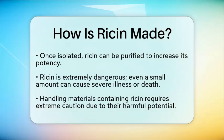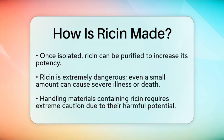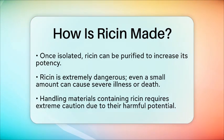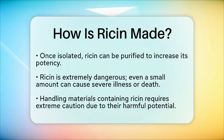In conclusion, the production of ricin involves the extraction of seeds from the castor bean plant, followed by oil extraction, and finally the isolation and purification of the ricin protein from the remaining seed cake. This process highlights the importance of handling such materials with extreme caution, given their potential for harm.